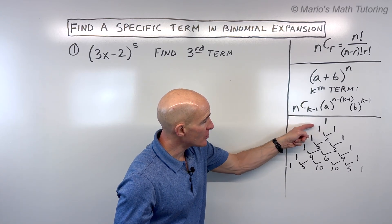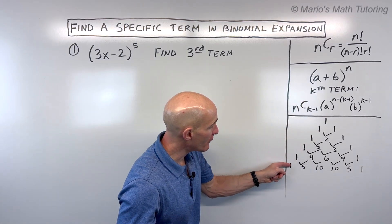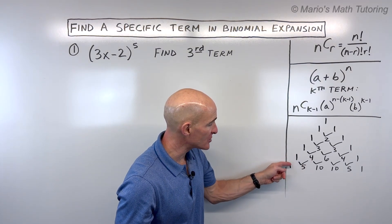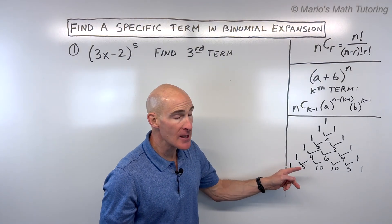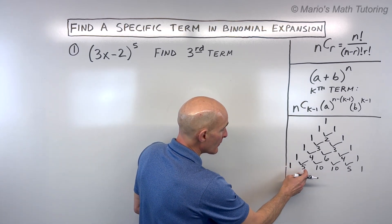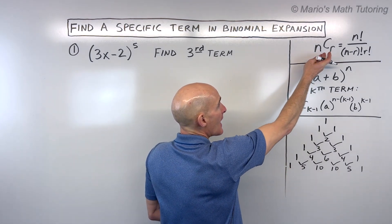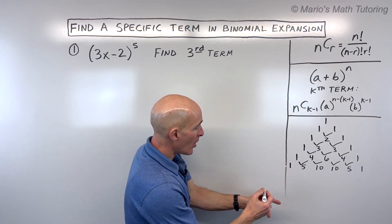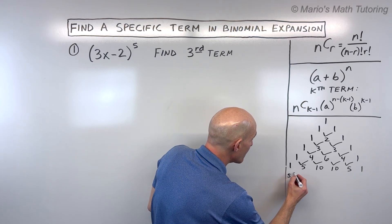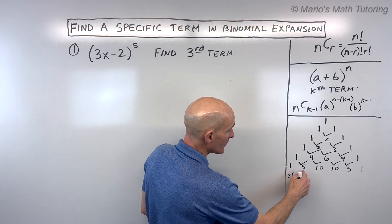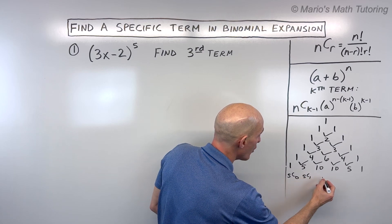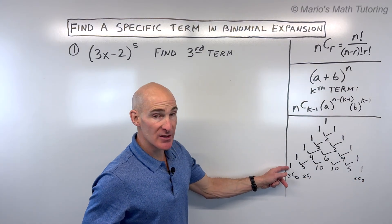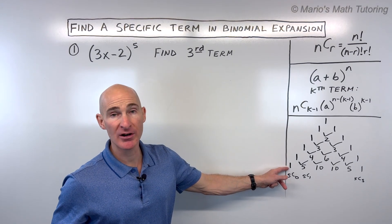Keep in mind Pascal's triangle starts at row 0: 1, 2, 3, 4, 5. When you get further down, the second number tells you what row you're on — so here this is row 5. If you want to understand where these numbers come from, you can use combinations: nCr. This first entry represents 5C0, and they go all the way to 5C5.